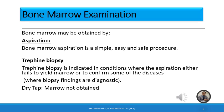If both procedures are performed — aspiration and trephine biopsy — and during aspiration the marrow is not obtained, it is called a dry tap. A dry tap is very common in hairy cell leukemia and myelofibrosis, because the marrow has been replaced by fibrous tissue. So we have two types: aspirate and trephine biopsy, where a dry tap means the aspirate may not be obtained.